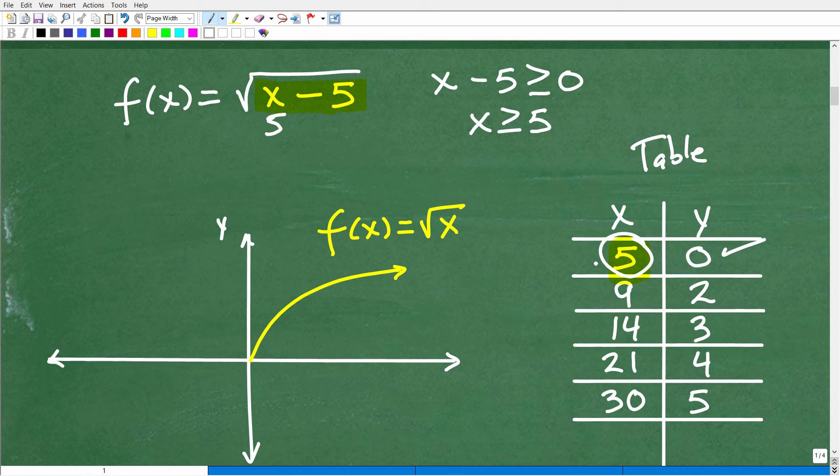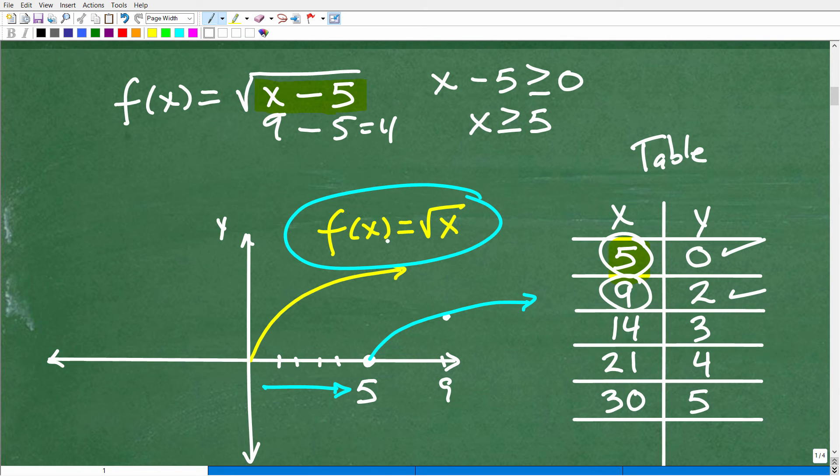All right. So now here, let's just go ahead and start plotting these points. So 1, 2, 3, 4, 5. So when x is 5, y is 0. So this is my first point here. Now, I could just kind of put some additional points. When x is 9, this is going to be what? 9 minus 5 is 4. So that's 2. So over here at 9, it is 2. So what is occurring here is this graph. Let me just draw this a little bit better, maybe something like here. So this graph was basically moved over this yellow graph, this original square root of x function, which shifted over 5 units to the right. That's what occurred here.